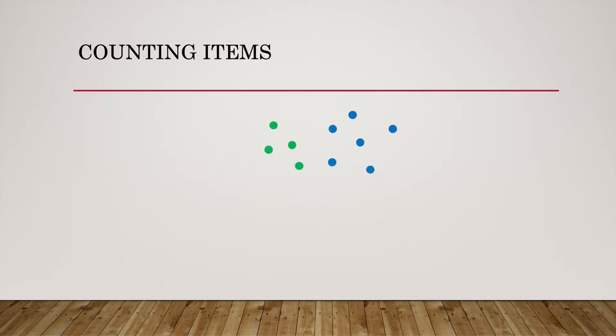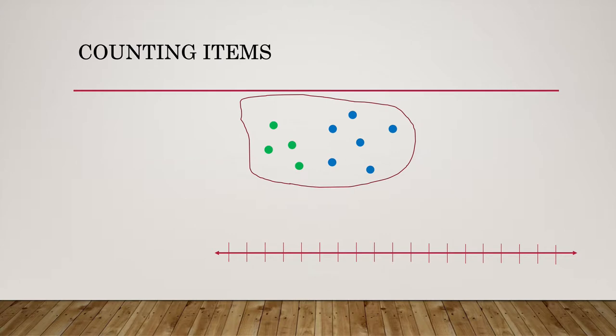Counting items. So let's say we have some items and we decide to group them and now we want to count them. Can you draw a number line? Yes. Can you put some dashes on the number line? Yes, I can. Okay, let's put some numbers on the number line. Alright. So if we move those items now to the number line, we can count them. And so do the rest. And there we go.